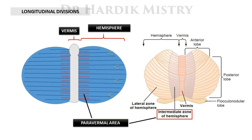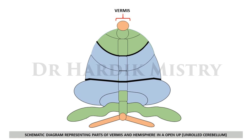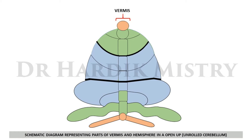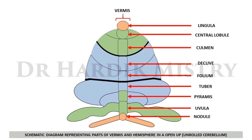The longitudinal divisions of the cerebellum include the central vermis and the peripheral hemisphere. The hemisphere has an intermediate zone and a lateral zone; the intermediate zone is known as the paravermal area. The parts of the vermis are: lingula, central lobule, culmen, declive, folium, tuber, pyramids, uvula, and nodule.